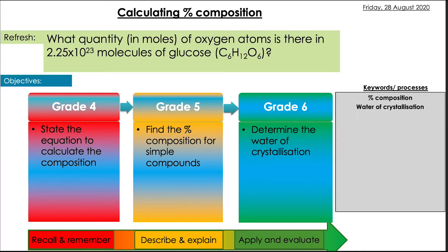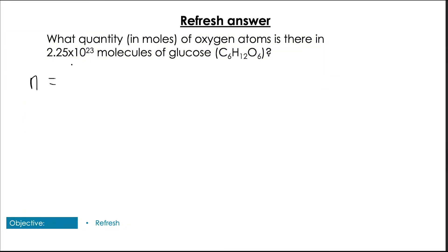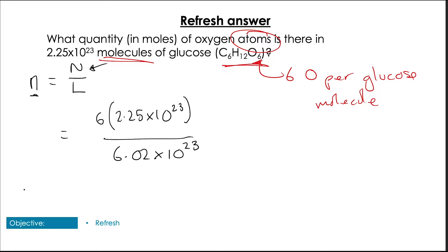So we're going to be looking at how to calculate percentage composition, look at some simple examples, and then also look at something called water of crystallization and how these two link. But for now, there's a question - pause the video and have a go. Okay, so the question is asking you for a quantity in moles. So we're going to do moles equals number of particles divided by Avogadro's number. Now we're going to make sure that we're paying attention - there are six oxygen atoms per molecule of glucose. So we're going to have to do six times the number of molecules divided by Avogadro's number, and that gives us 2.24 moles of oxygen atoms.